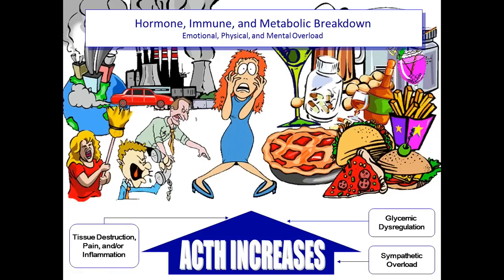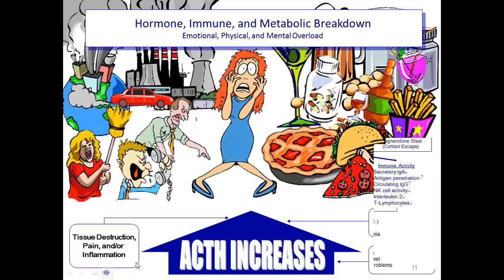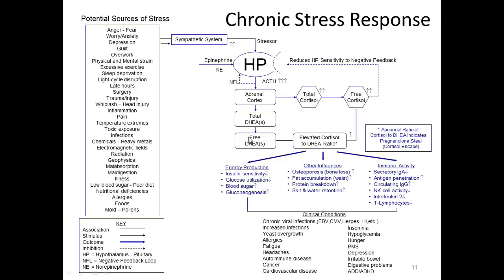This overview slide shows that the hormone system, metabolic system, immune system, and neurological system are all interlinked and intertwined. Through environmental exposures, foods we eat, and our emotional state, it all has an impact. It's primarily mediated through a chemical called ACTH — a chemical secreted by the brain when the brain interprets stress.